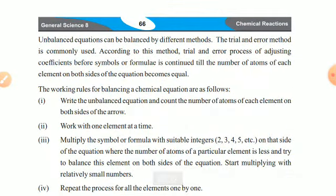One commonly used method is the hit and trial method — adjusting coefficients before symbols or formulas so that the number of atoms of each element on both sides of the equation becomes equal.